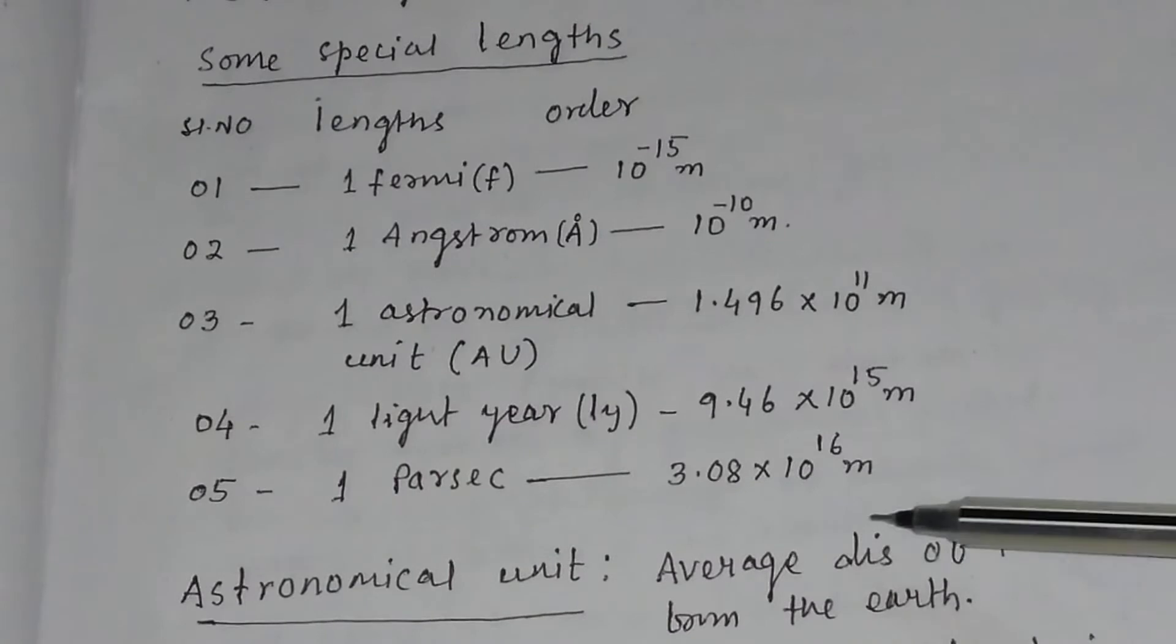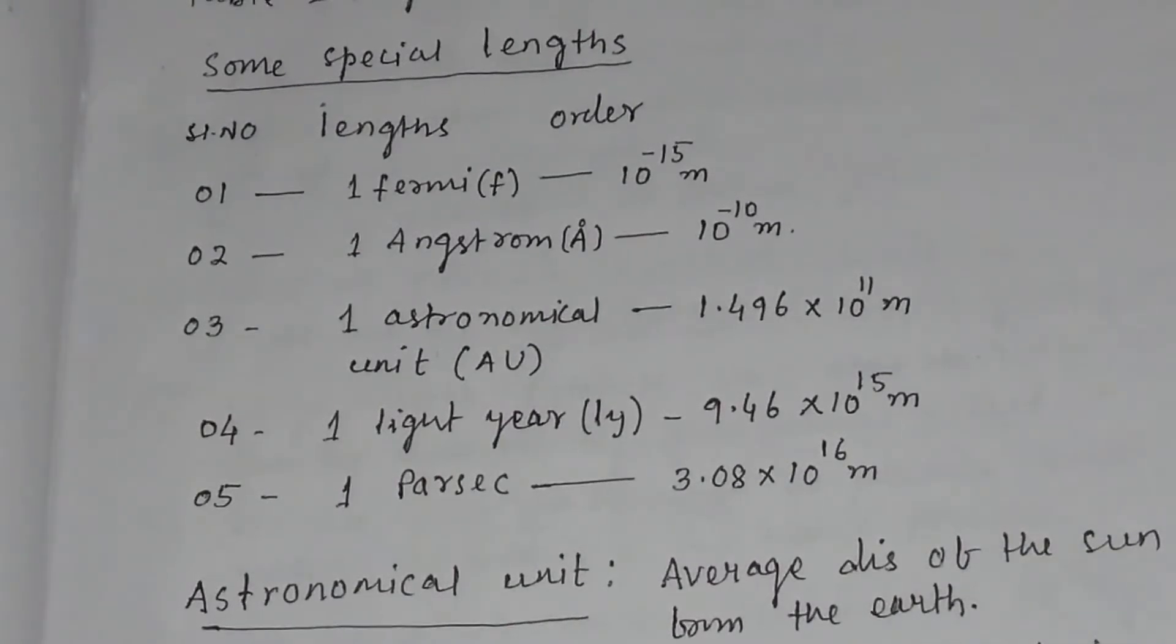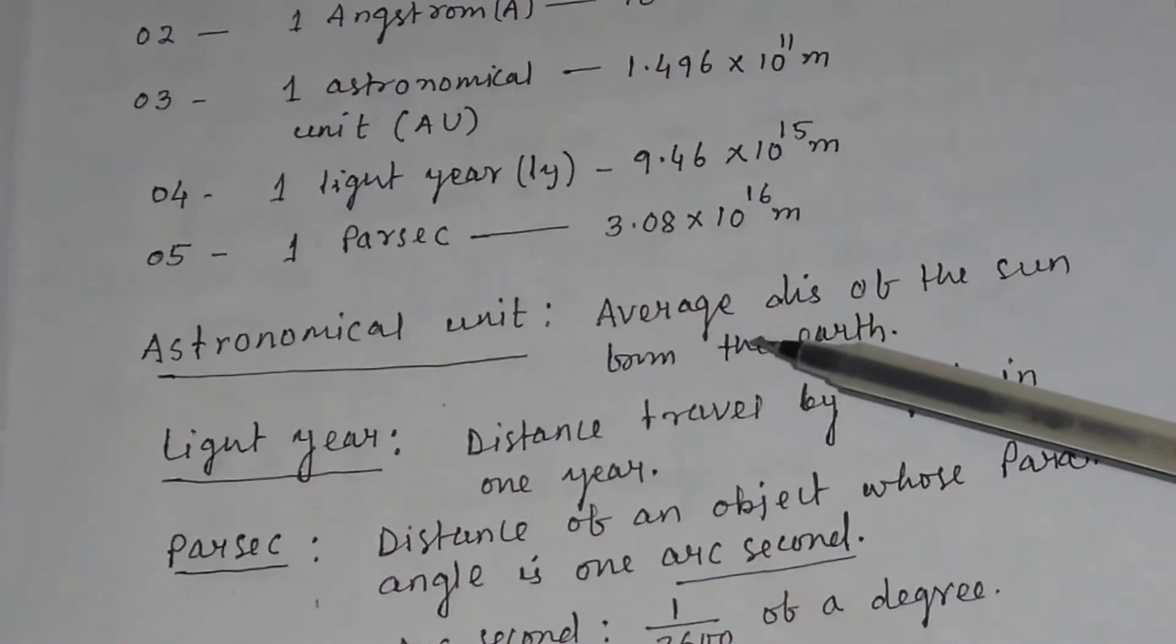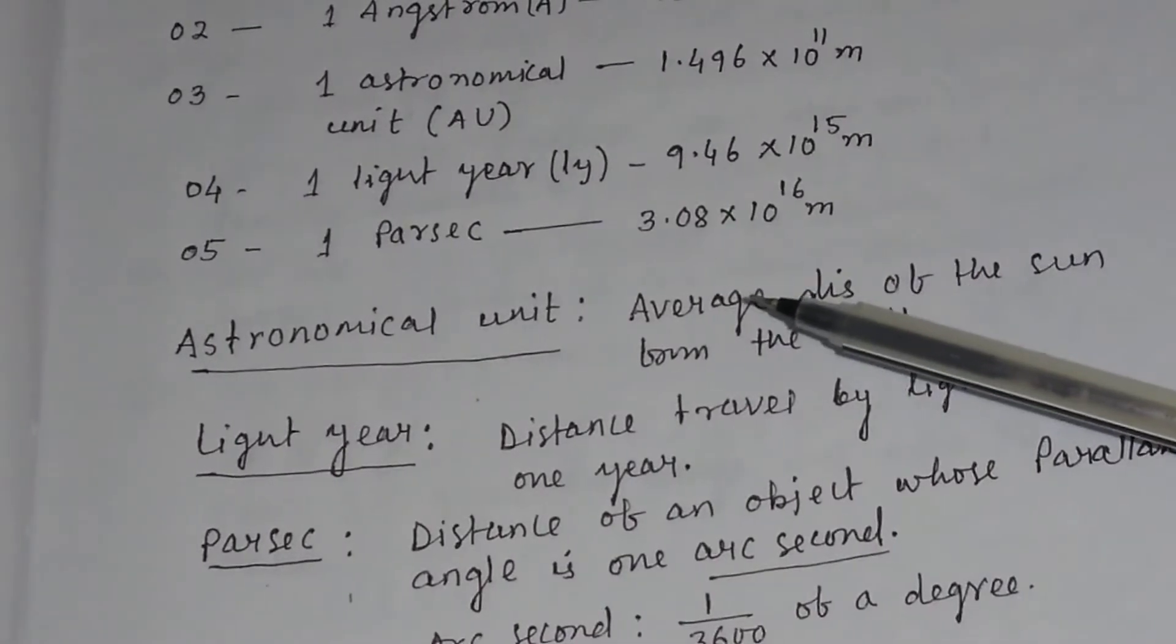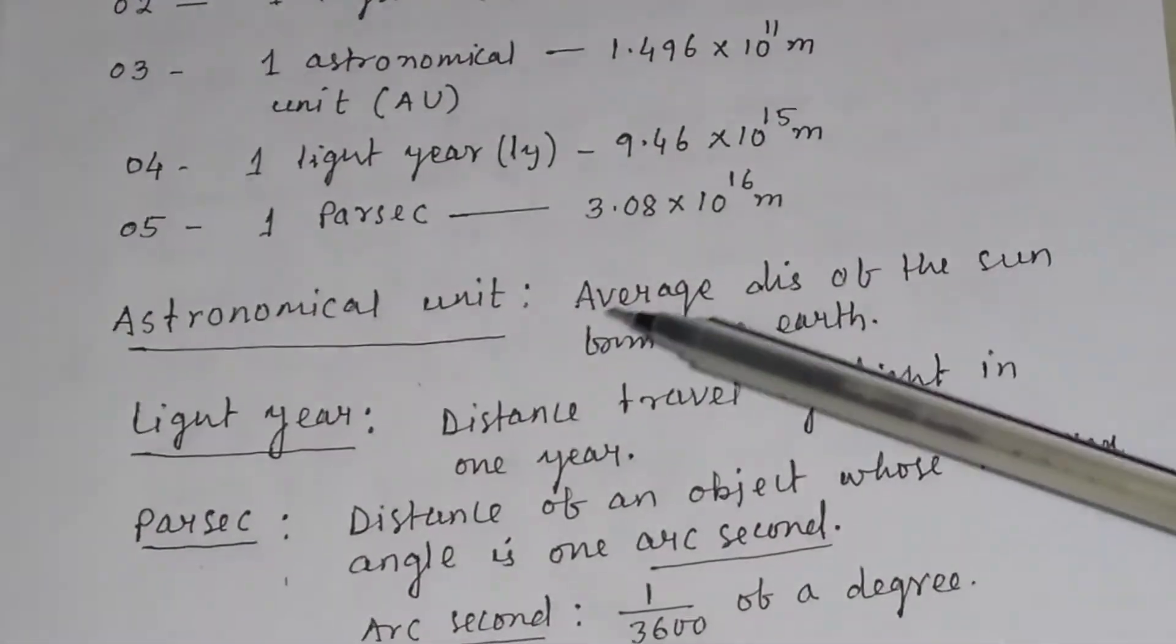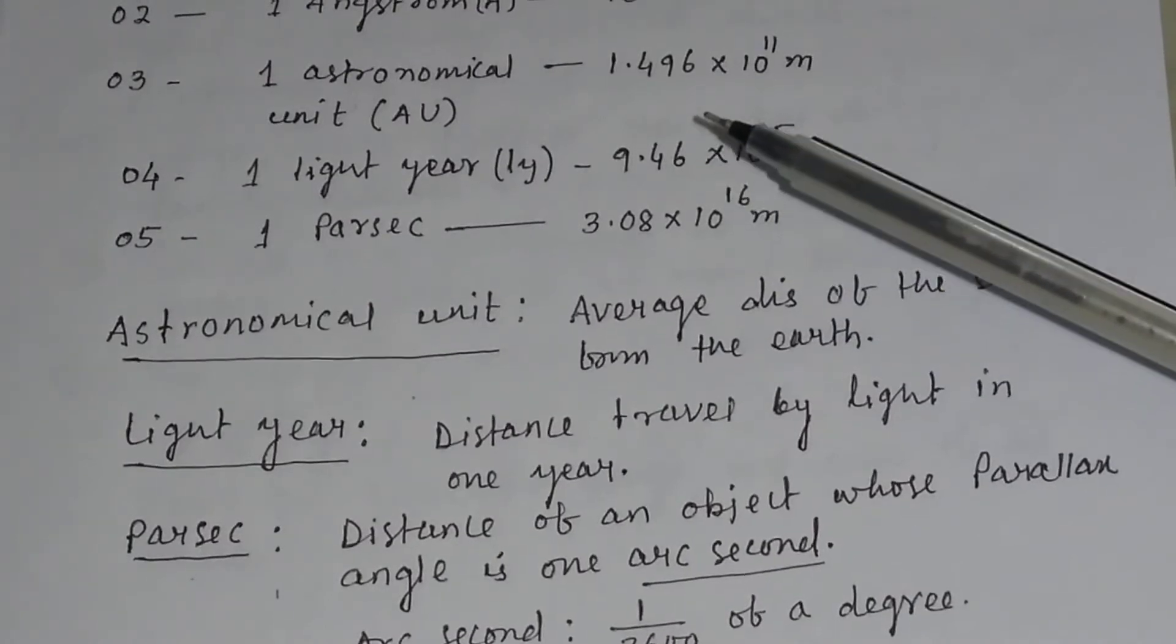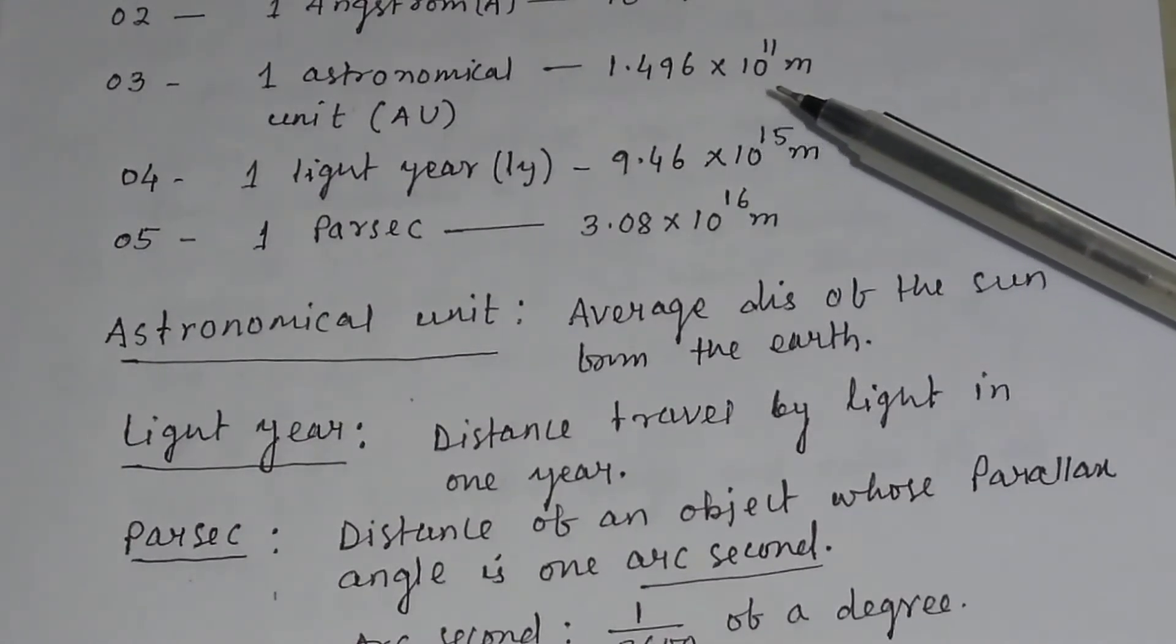Astronomical unit means average distance of the sun from the earth. So, this is a special unit for length which is generally used in astronomical unit or astrophysics. That is, the astronomical unit AU is equal to 1.496 into 10 to the power 11 meter.